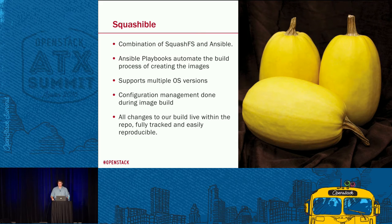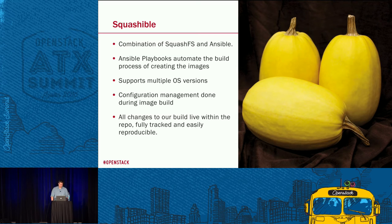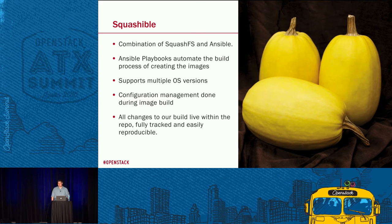Once the image is online and running, you deploy configurations to it and they persist on the store. If you reboot, it still pulls the configs you deployed. All changes in the build live within the repo — fully tracked and reproducible. You can generate an image of the latest build or go back to a previous image to reproduce what you're running in production.